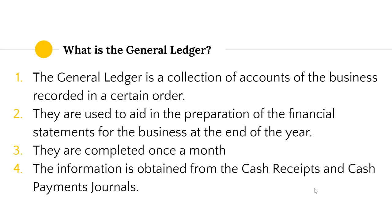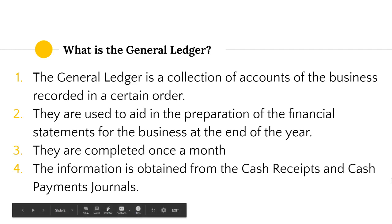Why would the business do financial statements? They want to work out whether they've made a profit or a loss. Businesses are required to produce certain statements, particularly if they are earning a certain amount of revenue a year. The general ledger is the next step in the accounting cycle and is completed once a month. Every month you draw up your cash receipts journal and cash payments journal, then post that information into the general ledger.